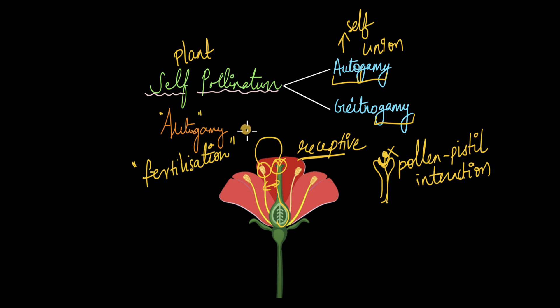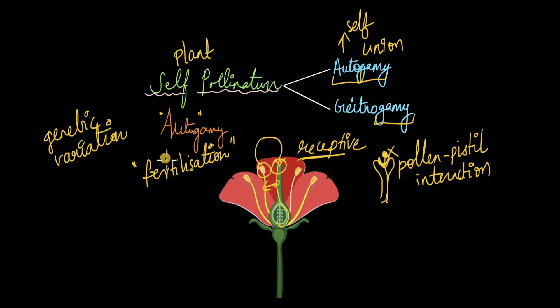A major disadvantage of autogamy is that there is no genetic variation. Because the male and female gametes are produced by the same plant, they have the same genotype. Any deleterious mutations in the gametes will be passed on to the offspring, reducing genetic variation. Nevertheless, when the goal is to produce a large number of offspring in a short period of time, plants opt for autogamy because the need for numbers greatly outweighs the risk of mutations.